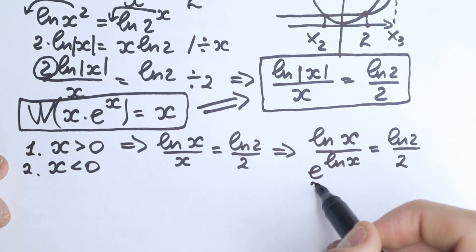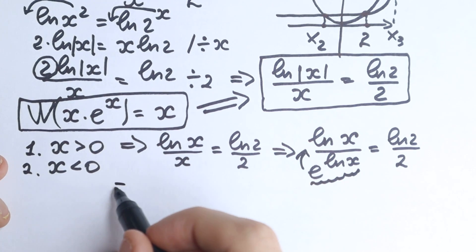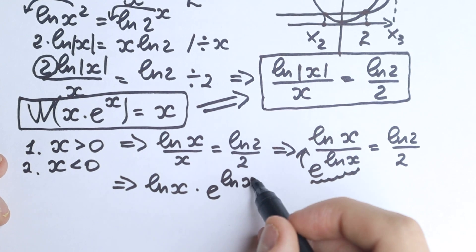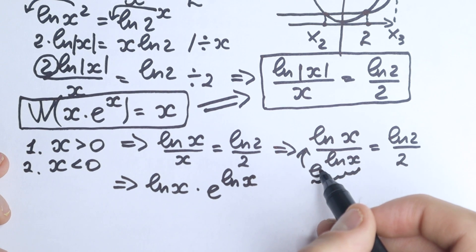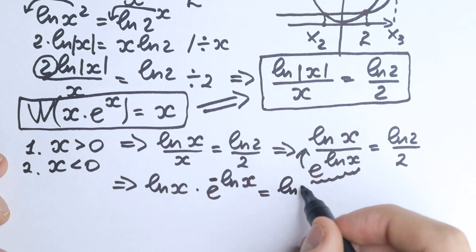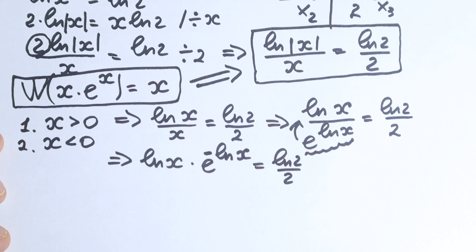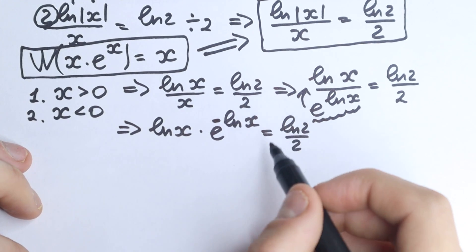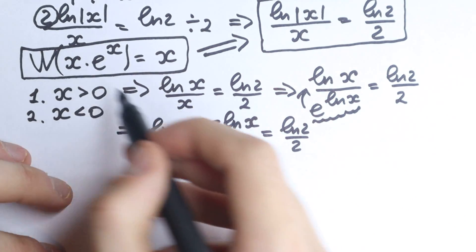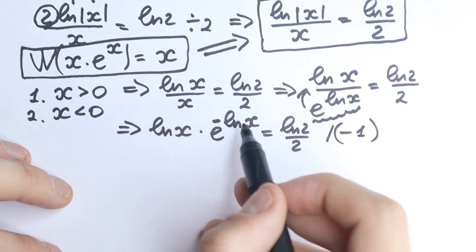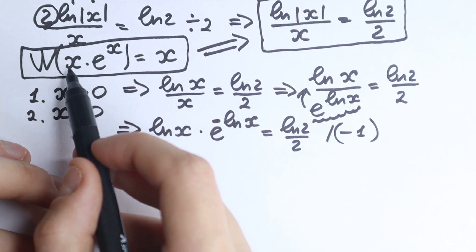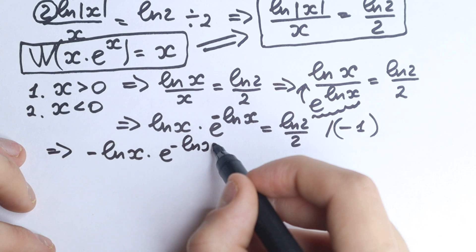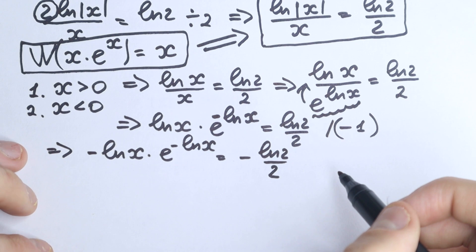Now let's simplify to match the Lambert W form — we need the same expression in both positions. Multiplying both sides by minus 1 gives us: minus natural log x times e to the power minus natural log x equals minus natural log 2 over 2. Now look closely: we have minus natural log x times e to the power minus natural log x — the same expression in both places — so we can apply the Lambert W function.